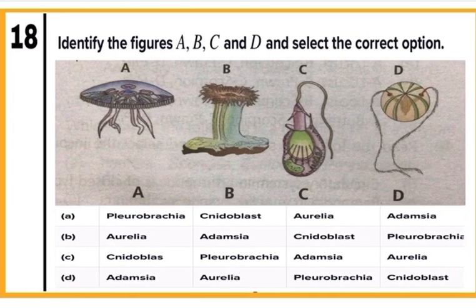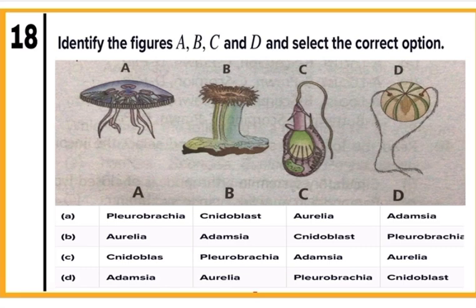Question 18: Identify the given four figures A, B, C, and D. Figure A is the medusa form of Aurelia, a coelenterate. B is the polyp form of Adamsia, also a coelenterate. C is the nematocyst, which contains a stinging capsule and is present in the tentacles and body of coelenterates. D is Pleurobrachia, belonging to phylum Ctenophora. Correct option is B. Mark B.